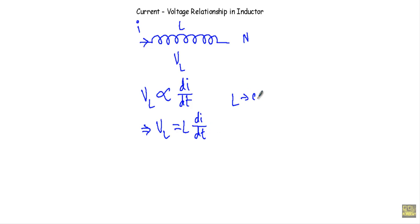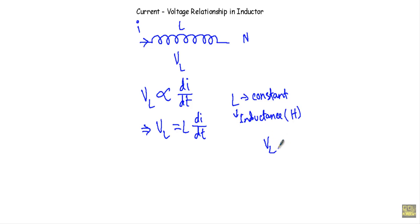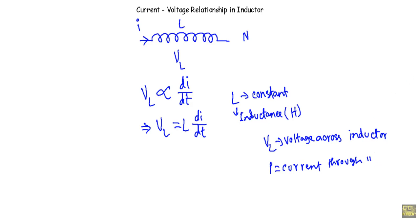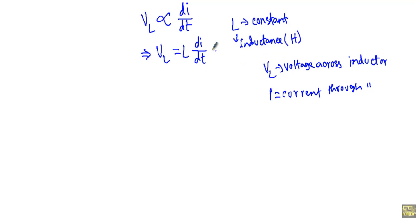This L is a proportionality constant, also known as the inductance of the inductor, and the unit of inductance is Henry. Now I have to establish the relationship between current and voltage, where VL is the voltage across the inductor and I is the current passing through it.